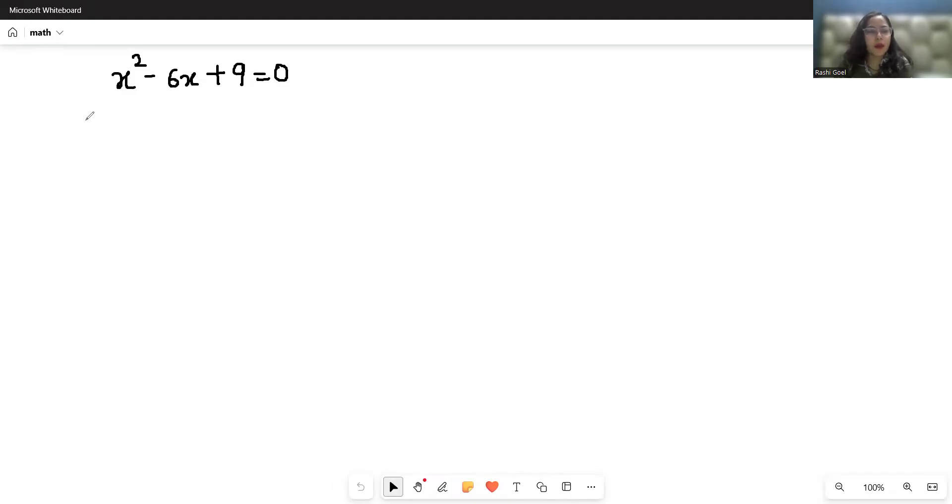In the factorization method, we have to choose two numbers. That means we have to break this middle digit, -6, into those two numbers so when we add them we get -6, and when we multiply them we get 9.